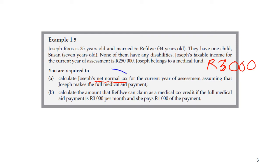Because they asked for the net normal tax liability, remember we are dealing with a natural person. Joseph is 35 years old — younger than 65 — so we use the tax tables for natural persons and he will only be entitled to a primary rebate. Because he contributes to a medical aid, he will also be entitled to the medical scheme tax credit in terms of Section 6A. He is the main member, Refuliwe is the first dependent, and their daughter Susan is the second dependent, so we use R620 plus R209 per month.